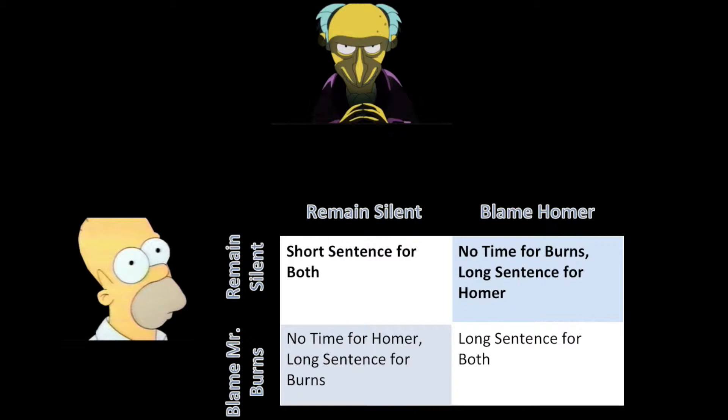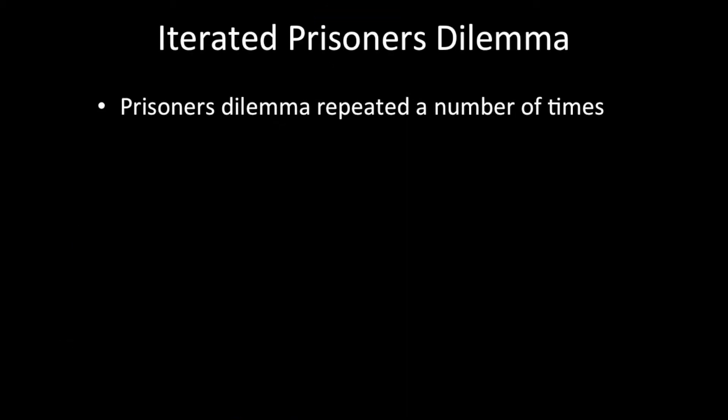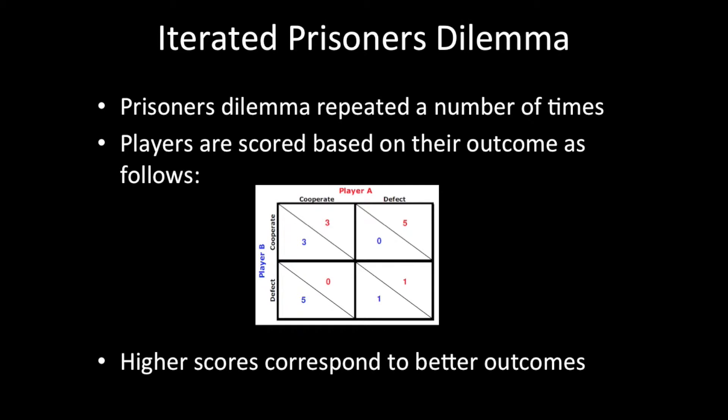This is a case of the classic prisoner's dilemma, where it's mutually beneficial for the total group for both players to cooperate with each other, while for each individual player it's beneficial to defect — that is, blame the other person. I chose to do my inquiry on the iterated prisoner's dilemma, which is just the normal prisoner's dilemma repeated for a number of times.